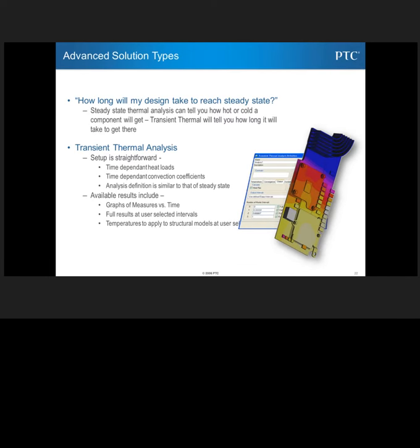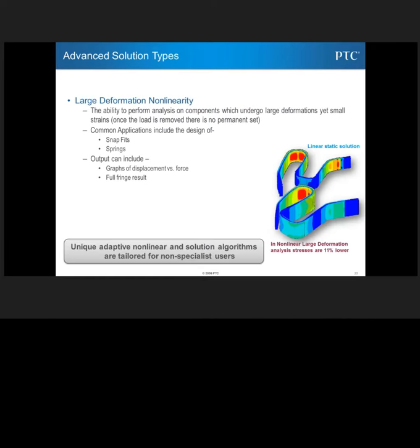For thermal, we have transient thermal analysis and this is available with Creo Simulate Advanced where you can set up a time lapse for your analysis and watch the temperatures change through time. Large deformation non-linearity. This is where it's still a linear problem but what happens is we recalculate the stiffness matrix as the model is deforming in a large way. So this is pretty important to be able to pick this as an option when you have a large deformation.